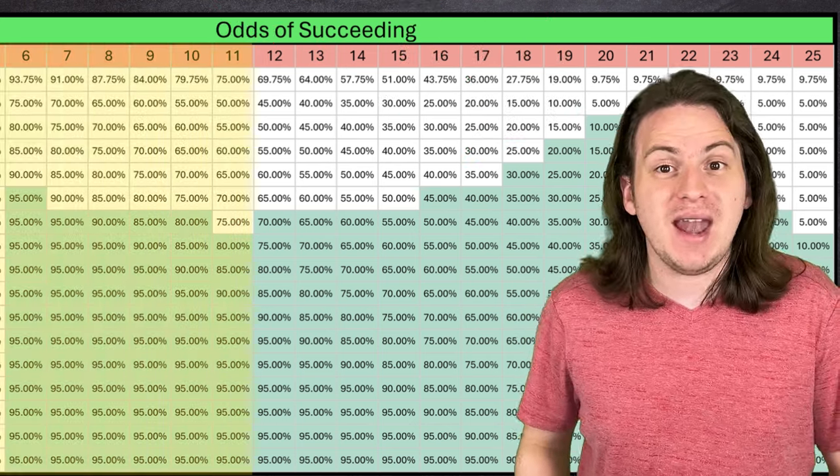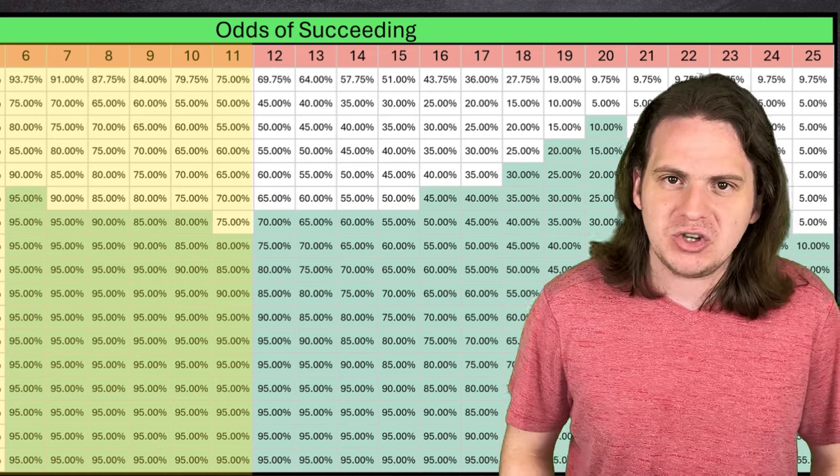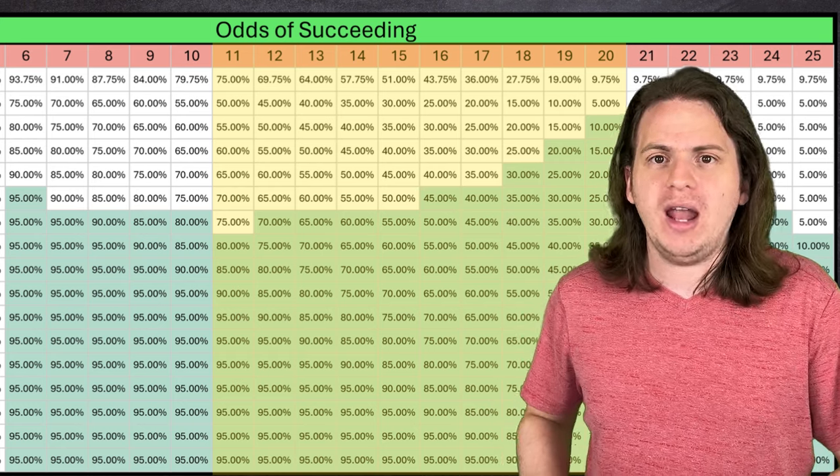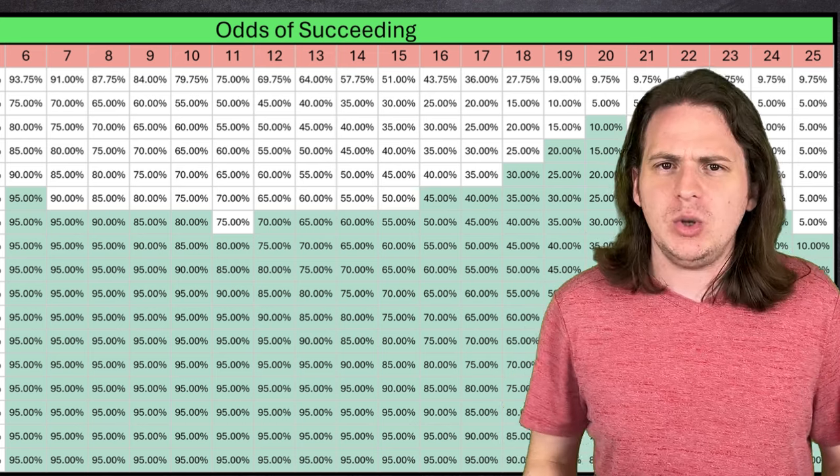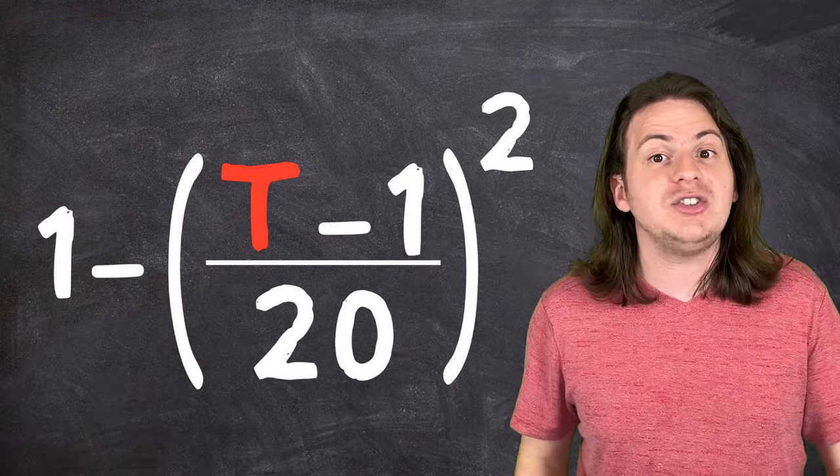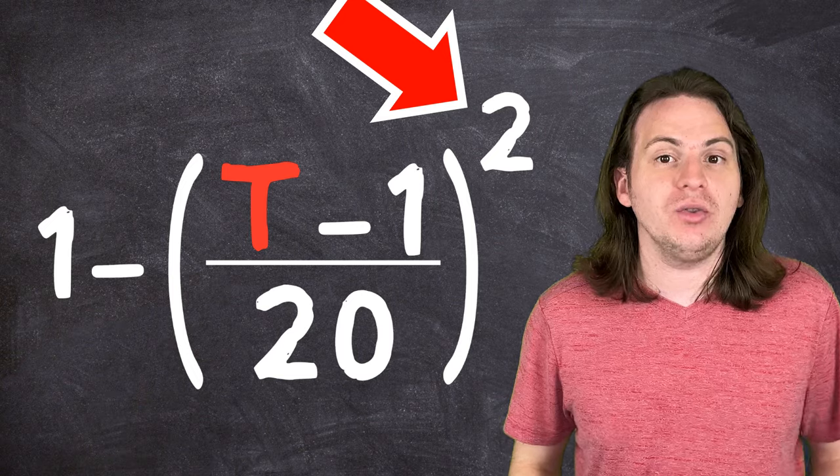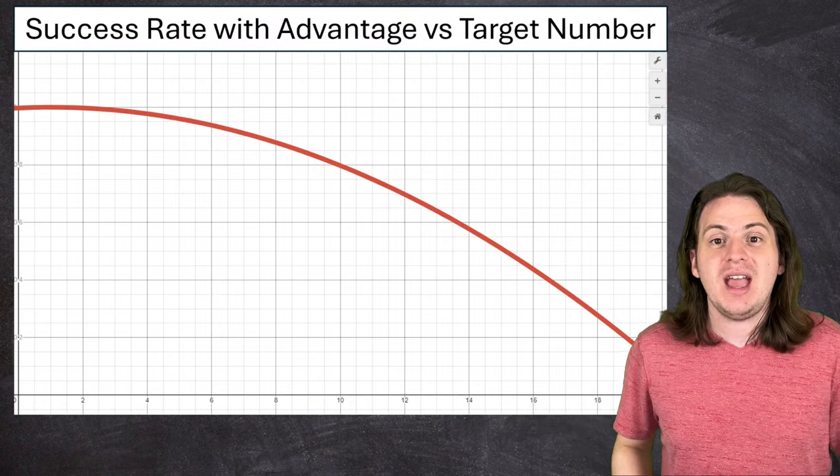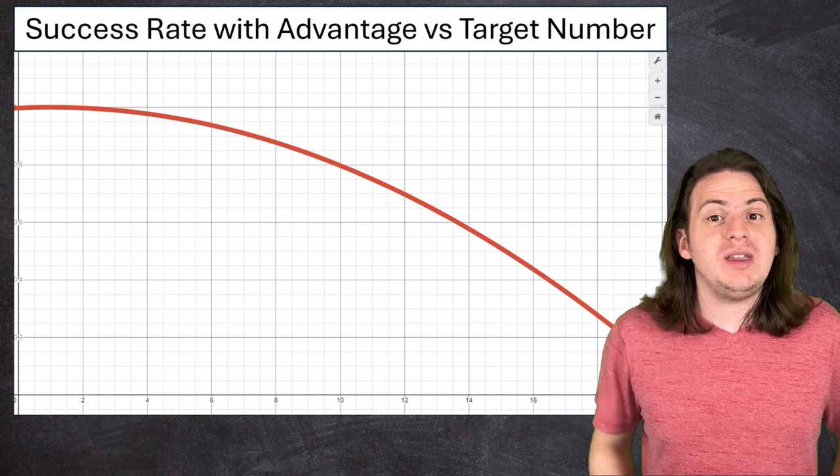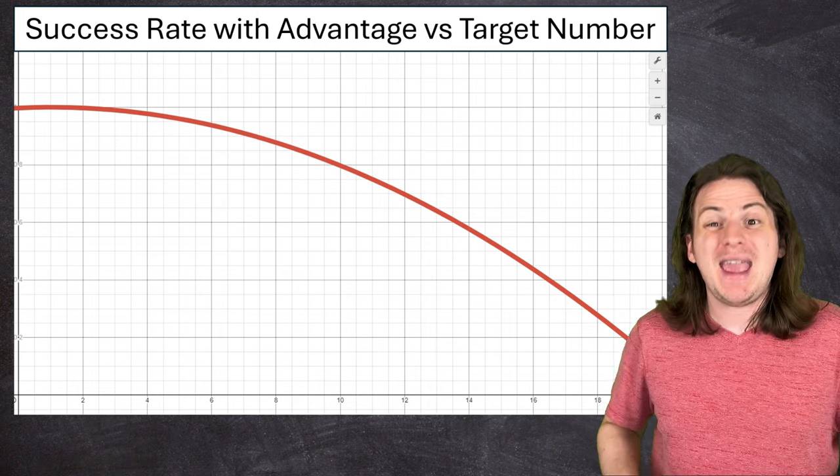From 6 to 11, as the difficulty increases, you need a higher and higher bonus to be able to beat out advantage. But from 11 to 20, it flips, and now the bonus you need gets lower and lower. At first this might seem counterintuitive, like why does it suddenly change? But remember, the equation for rolling with advantage was quadratic. That means that the odds aren't decreasing at a constant rate like they are with a single die. As the difficulty increases, the odds of succeeding with advantage decrease faster and faster. Essentially, rolling with advantage will help you avoid low numbers, but it won't necessarily help you hit higher numbers.